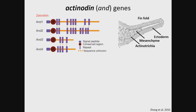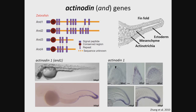Actinodon, or AN genes, code for the structural proteins in the actinotrichia. There are four members in zebrafish, AN1 through AN4. Actinodon expression correlates spatially and temporally with the formation of actinotrichia, both in the median fin and the pectoral fin.